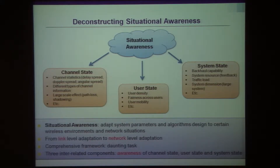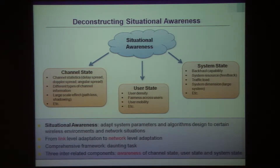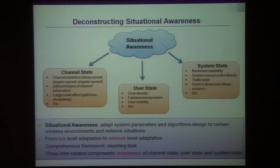We divide awareness into three types: channel state — what do you know about the channel; user state — you need to know who the users are, where they are, and maybe something about their preferences; and lastly, infrastructure — what infrastructure is available and what kind of complexity it has. We would like to adapt the network to the system parameters. Awareness is already present in communication systems; it's a question of how comprehensively you can integrate this awareness into the network, and whether we're missing things that we should learn and incorporate.